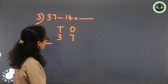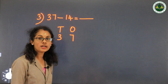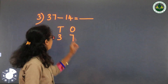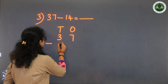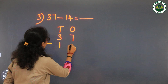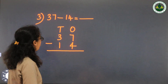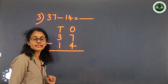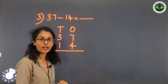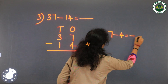Then minus 14. How many tens and ones in 14? 1 ten and 4 ones. Write 1 in the tens column and 4 in the ones column. First subtract the digits in the ones place: 7 and 4, so 7 minus 4 equals dash.